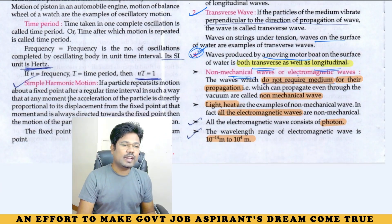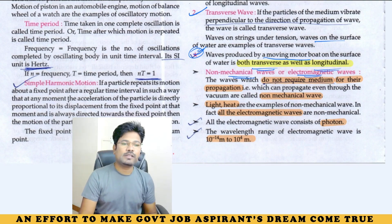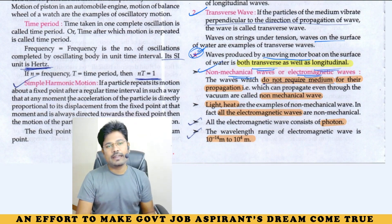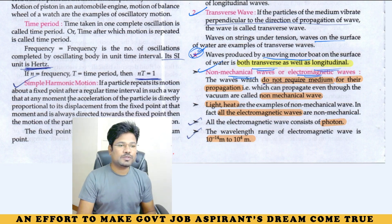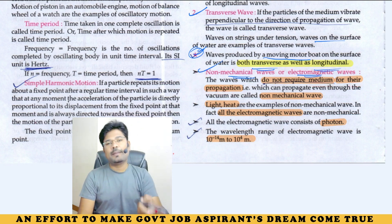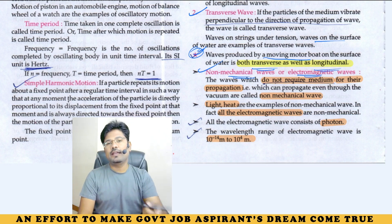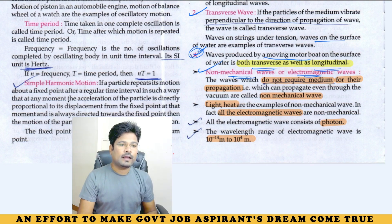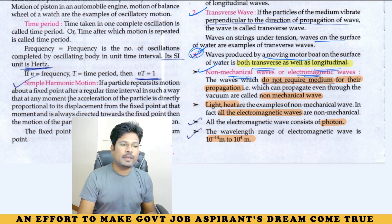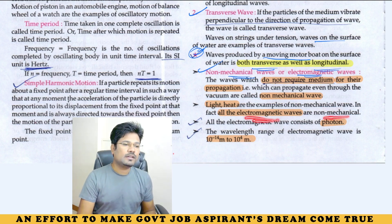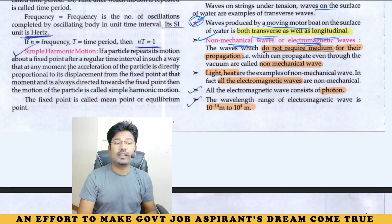Non-mechanical waves are electromagnetic waves. All electromagnetic waves are non-mechanical in nature. Waves that do not require a medium for their propagation are non-mechanical. Examples include light and heat — all electromagnetic waves are non-mechanical, and energy transmission occurs via photons.